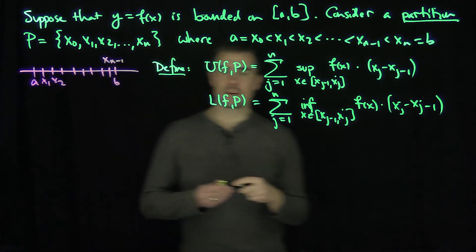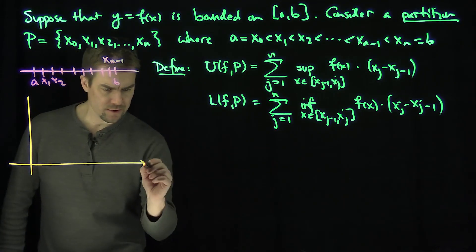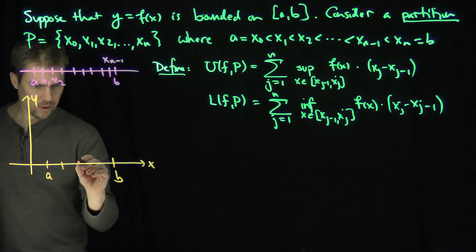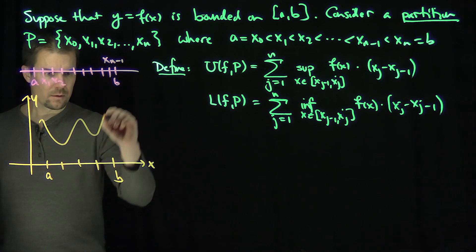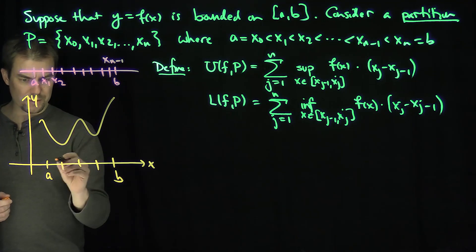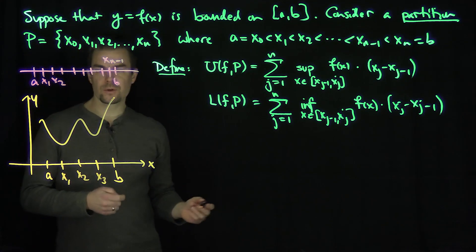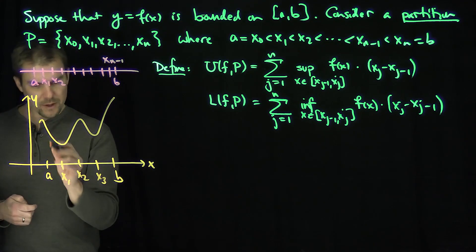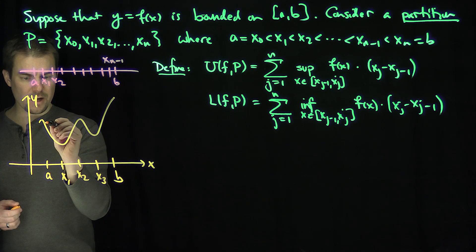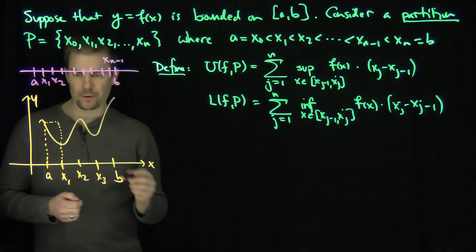Let's figure out what U(f, P) and L(f, P) are geometrically. If we're given a nice continuous function on [a, b] with a partition of, say, three subintervals, U(f, P) looks on each interval and asks: what is the largest value of the function? It multiplies that height by the width (x1 - x0), giving the area of a rectangle. So U(f, P) is the sum of rectangle areas using the supremum height on each subinterval.